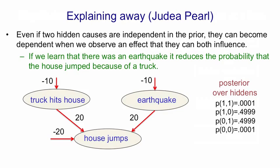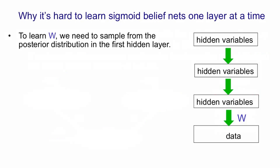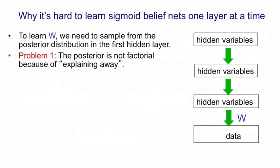Now that we've understood explaining away, let's go back to the issue of learning a deep sigmoid belief net. We're going to have multiple layers of hidden variables that give rise to some data in our causal model, and we want to learn those weights W between the first layer of hidden variables and the data. The posterior distribution over the first layer of hidden variables is not going to be factorial — they're not independent in the posterior — and that's because of explaining away. So even if we just had that layer of hidden variables, once we've seen the data, they wouldn't be independent of one another.